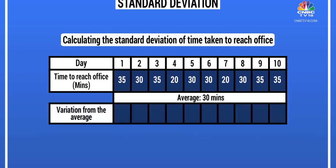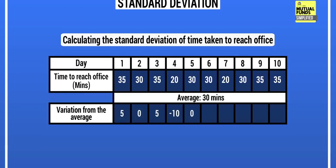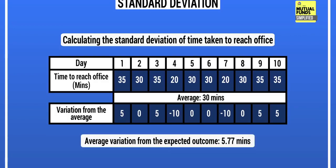Now let's look at the variation from that expected outcome. On day one you took 35 minutes, so the variation from the average is 5. On day two you took 30, so the variation is zero. On day three the variation is again 5, and on day four the variation is minus 10 because you only took 20 minutes. The average variation from the expected outcome works out to roughly 5.77 minutes. Importantly, both positive and negative deviations are considered risk — so minus 10 is still treated as plus 10.